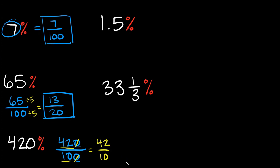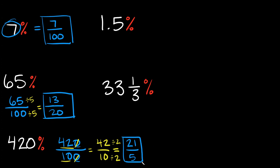Can I reduce 42 over 10 anymore? Yes, because both numbers are divisible by 2 — they're both even. So I'm going to divide the top by 2 and divide the bottom by 2. 42 divided by 2 is 21, and that goes over 10 divided by 2, which is 5. This is as reduced as we can get it, so your final answer here would be 21 over 5.